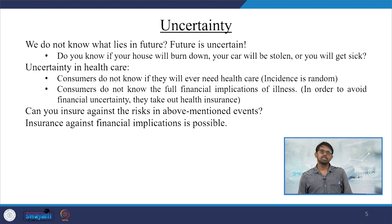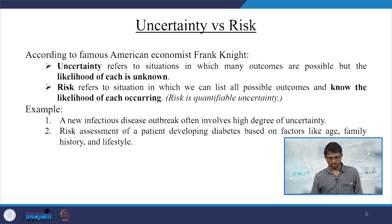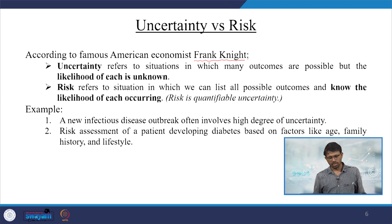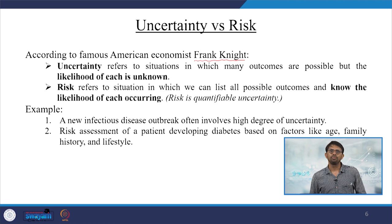To avoid financial uncertainty, consumers take out health insurance. The question is whether you can insure against all mentioned risks and whether insurance against financial implications is truly possible. We need to compare uncertainty and risk. According to the famous American economist Frank Knight, uncertainty refers to a situation in which many outcomes are possible but the likelihood of each is unknown, whereas risk is discussed in the context of quantifiable uncertainty. Risk refers to a situation in which we can list all possible outcomes and know the likelihood of each occurring.